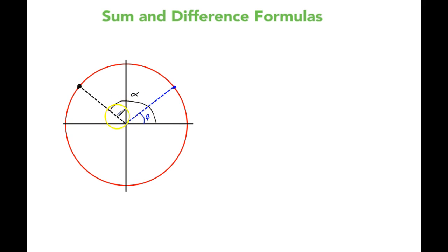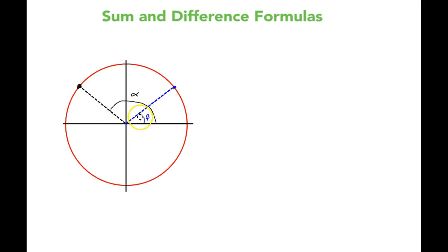I've got two angles here — alpha and beta — and what I'm going to do is subtract alpha minus beta. So I want to create that angle alpha minus beta in two different places. One, I've got it right here: this is alpha, this is beta. So if I'm taking away beta from alpha, just going from here to here, that would be alpha minus beta.